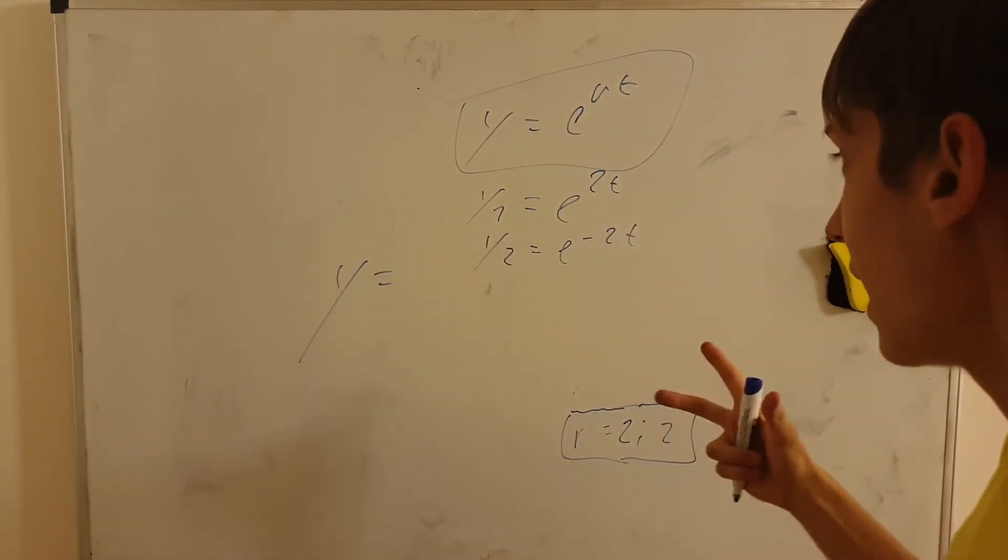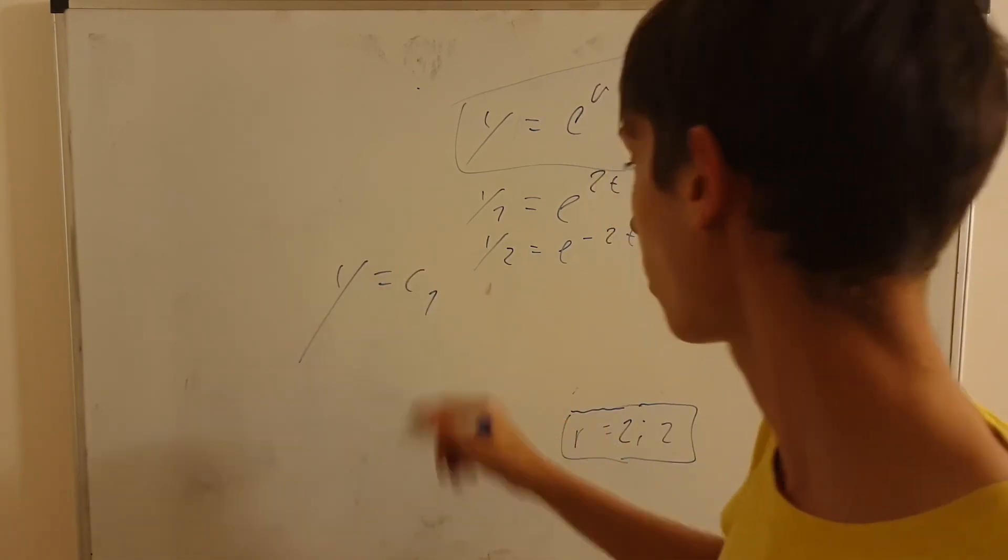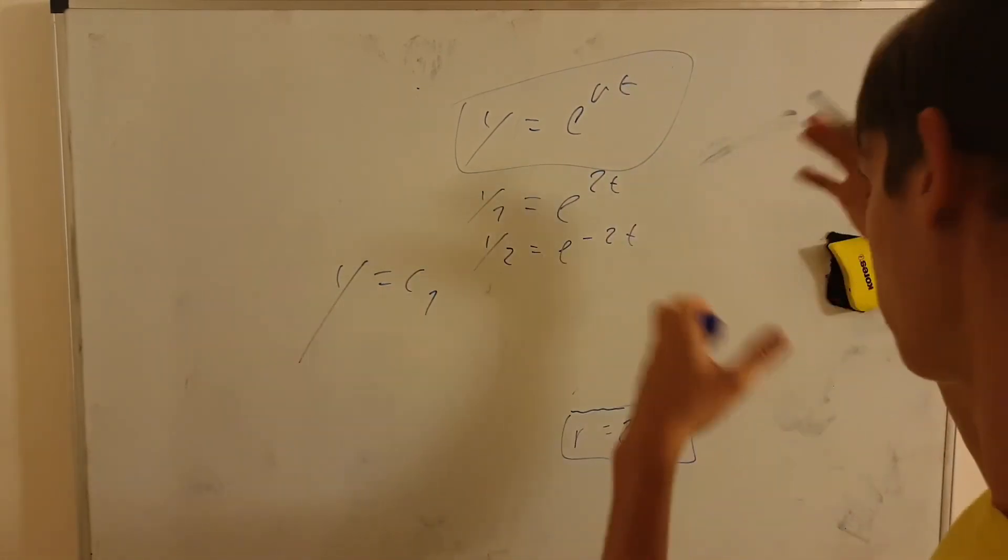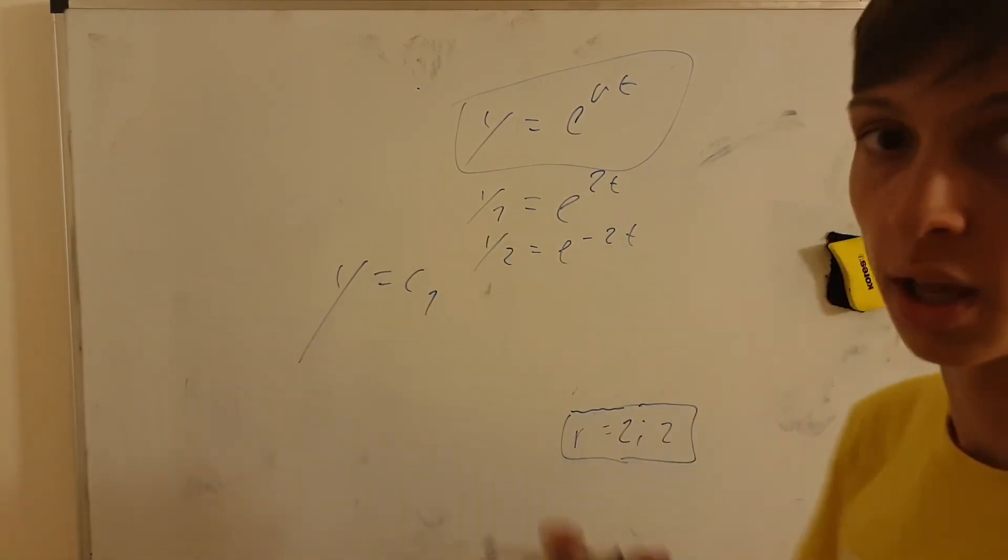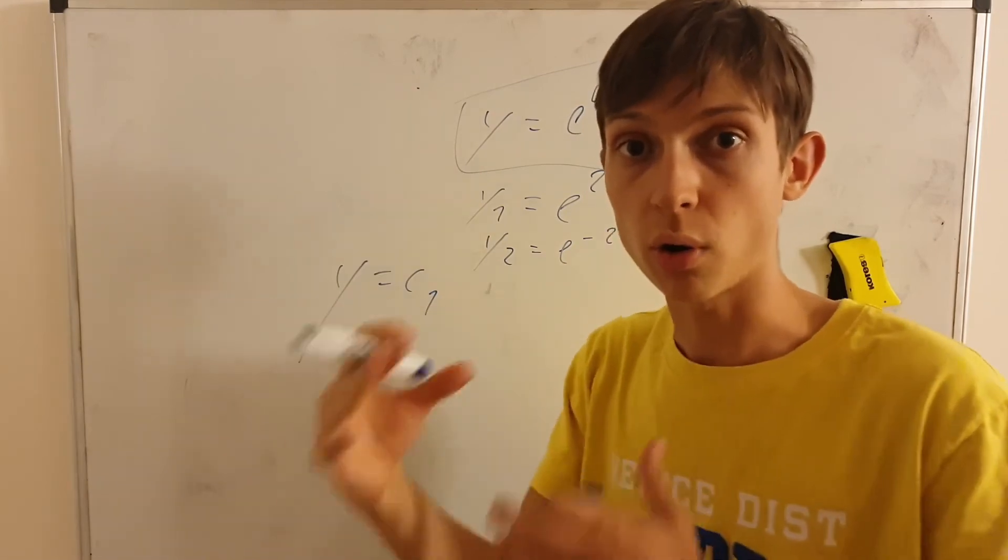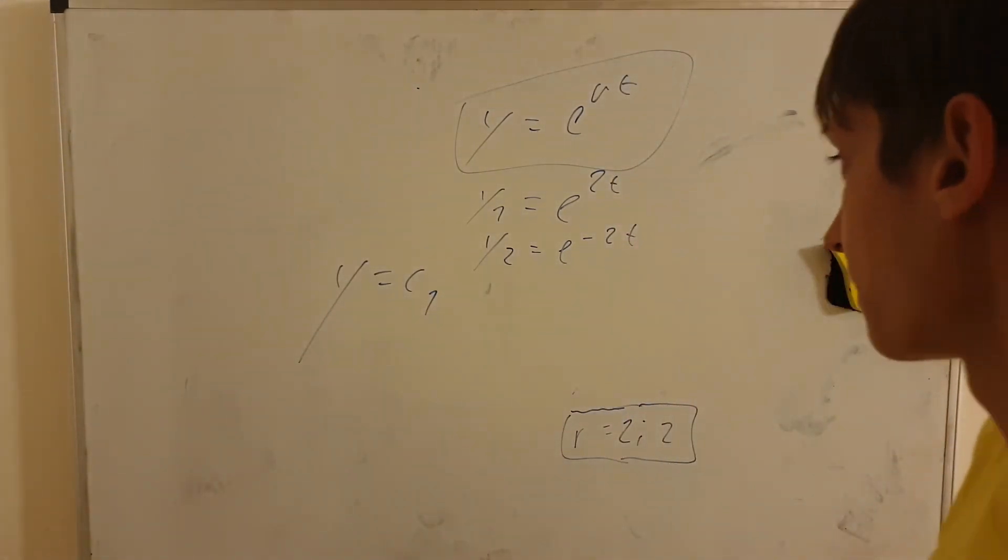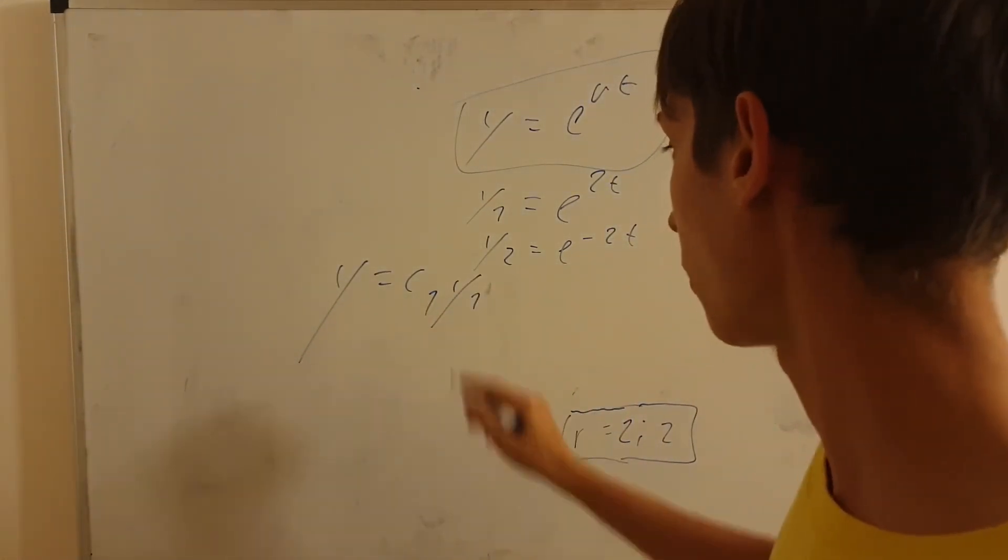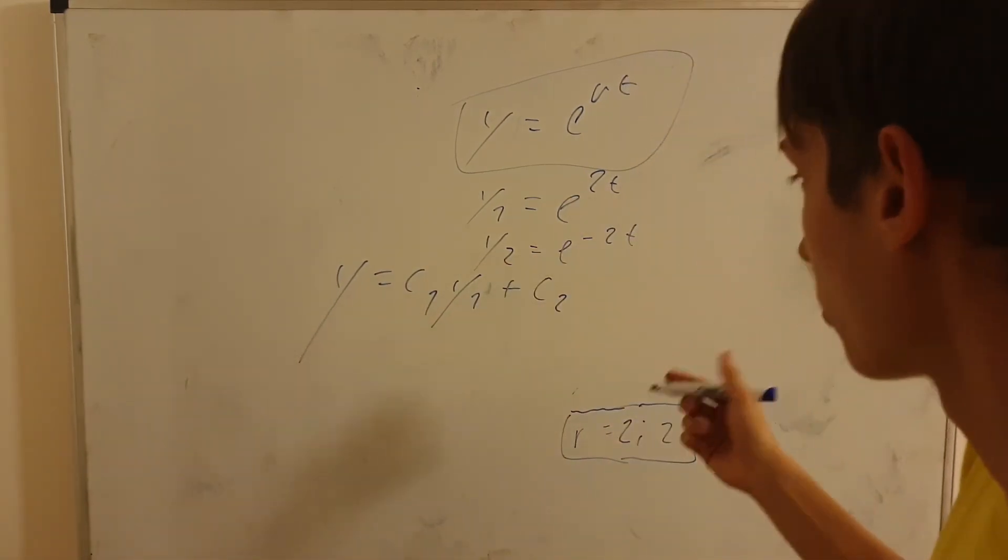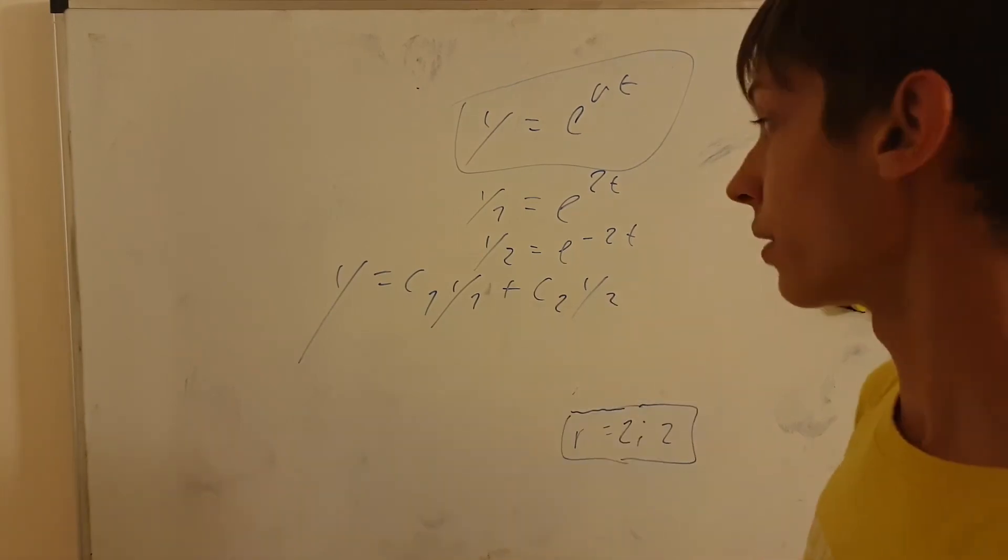And now, the idea is that the general solution is any linear combination, that means a constant multiple of the first solution plus whatever constant multiple of the second solution, depends on the initial value. So it can be any of those constant multiples are solutions to the differential equation. The general solution is some constant multiple of the first one plus some constant multiple of the second one.